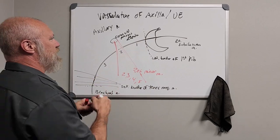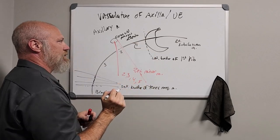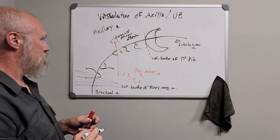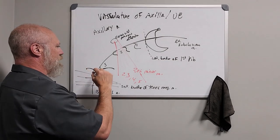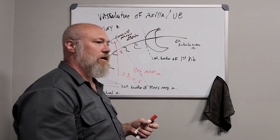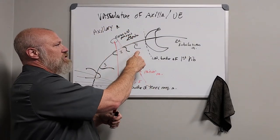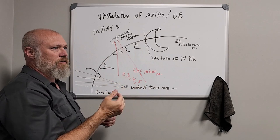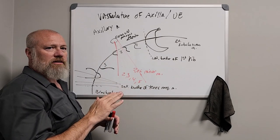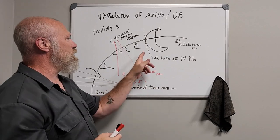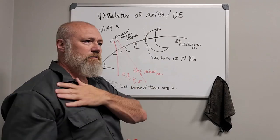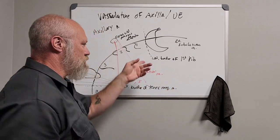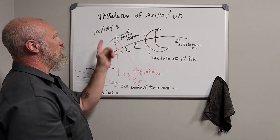Starting with section one, that one branch is called the superior thoracic artery — also known as the supreme thoracic artery or highest thoracic artery, but call it the superior thoracic artery. Given its name, the blood supply from the superior thoracic artery goes to the superior anterior aspect of the thorax. The superior thoracic artery is the single branch off the first section of the axillary artery.